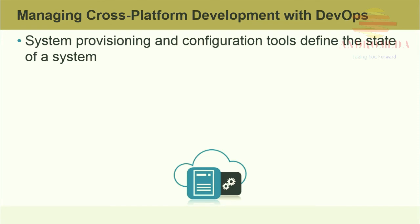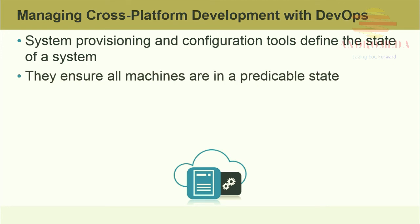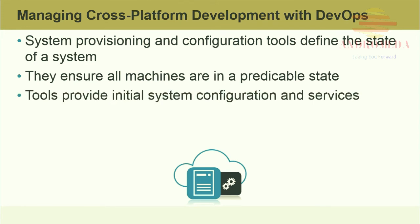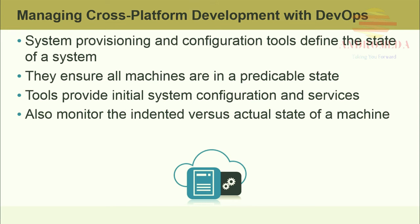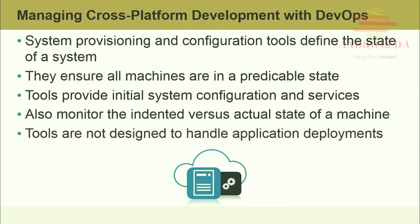System provisioning and configuration tools define the state of a system — configuration tools ensure that the thousands of network configuration options are set properly. They also ensure that all machines are in a predictable state, like they're up and running. Tools provide initial system configuration and services, and they monitor the intended versus actual state of a machine and can make configuration changes on the fly. Tools are not designed to handle application deployments, but to ensure that the network the application is deployed upon is configured correctly.